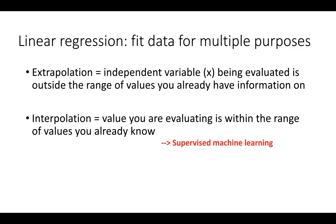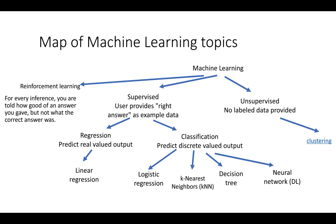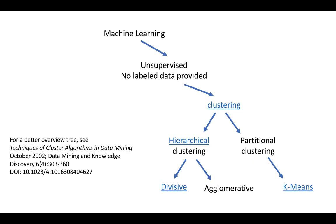For a little bit of context, we've already done a little bit of machine learning. In our previous class we talked about linear regression—the idea that you could fit a line to some data points, either for extrapolating data outside the range of values you have, or interpolating within that range. Both of these fall into the supervised machine learning category. Machine learning is this large, diverse field of techniques for statistical data analysis. Now we're going to hop over into unsupervised learning to talk about clustering, which can be broken down into hierarchical versus partitional clustering, and we'll talk about k-means.